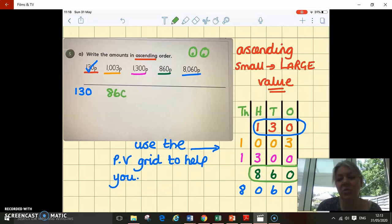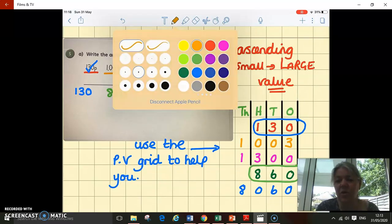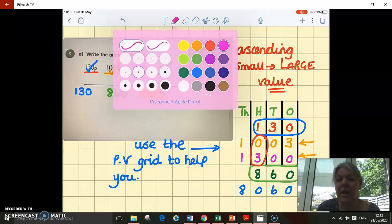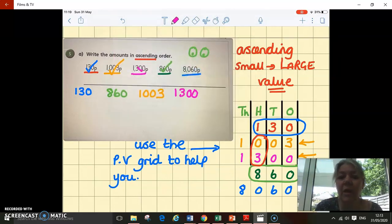Then I'm going to continue thinking about the place value. When I get to the thousands, I can see two amounts both have 1,000 in them. So I'm going to look at the next column, the hundreds, and that will help me decide which is biggest. I can see one has no hundreds and one has 300s, so 1,003 pence is smaller than 1,300 pence. I can add those onto my line, crossing them off as I go. And I'm left with 8,060 pence.